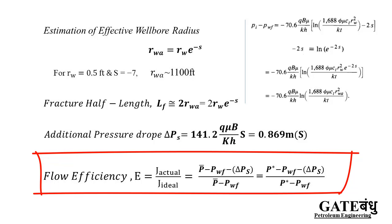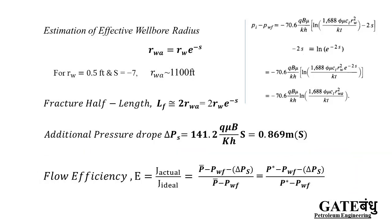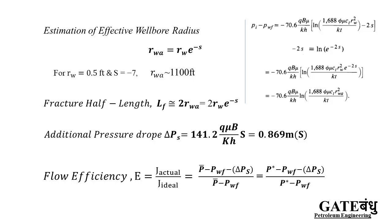Flow efficiency is the ratio of the actual productivity index divided by the ideal productivity index. For the same flow rate, this works out to: FE = (P̄ − Pwf − ΔP_skin) / (P̄ − Pwf). When positive skin is present and there is a pressure drop due to skin, the numerator is less than the denominator, making flow efficiency less than 1. When P̄ is approximated as P*, which is easily read from the Horner straight line, the equation can be written accordingly.